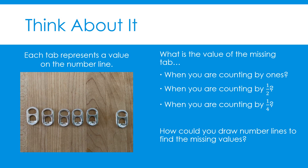Let's see if we can find the value of the missing tab in each scenario. Here's the missing tab. When counting by ones, you could have counted the missing tab as the number six: one, two, three, four, five, six.